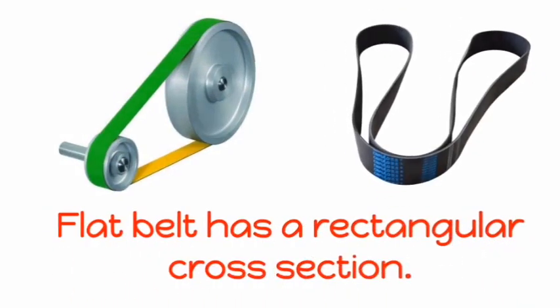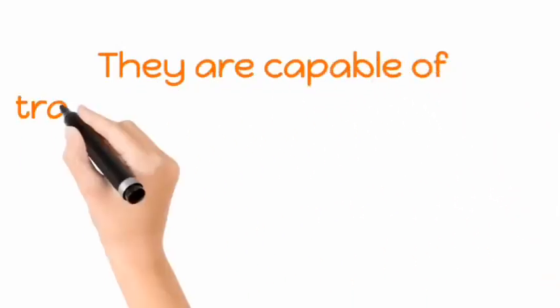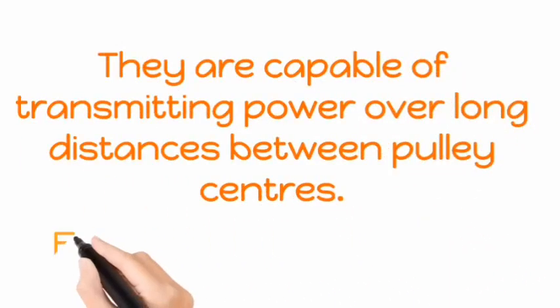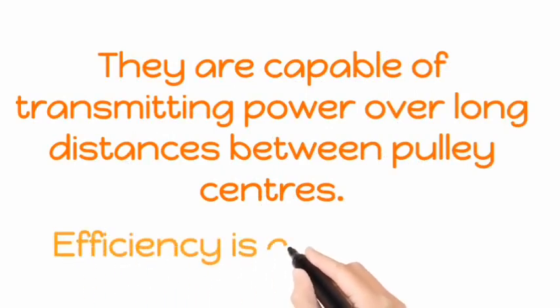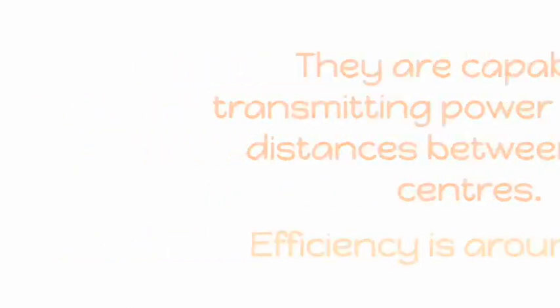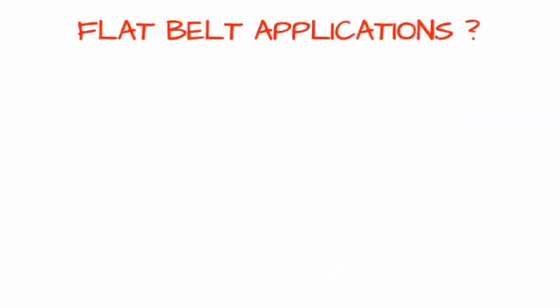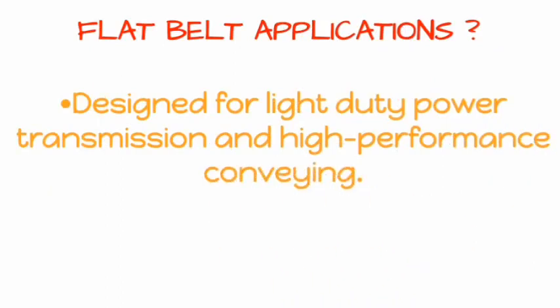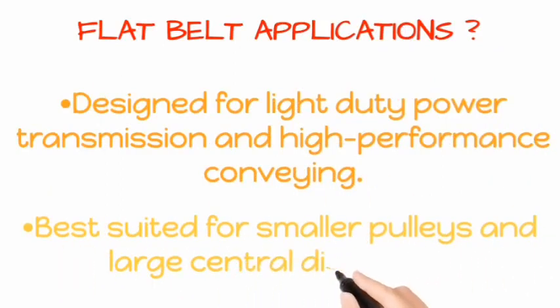Flat belt. Flat belt has a rectangular cross section. They are capable of transferring power over long distances between pulley centers, with efficiency as high as 98%. Flat belt applications: designed for light duty power transmission and high performance conveying, best suited for small pulleys and larger central distances.